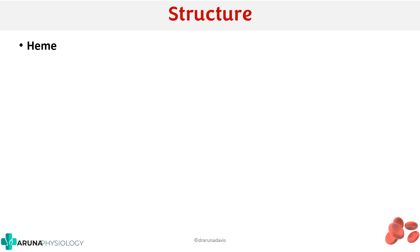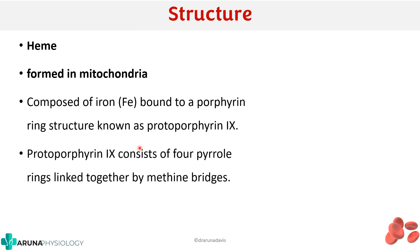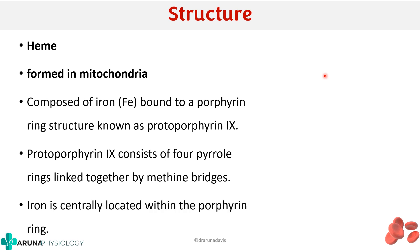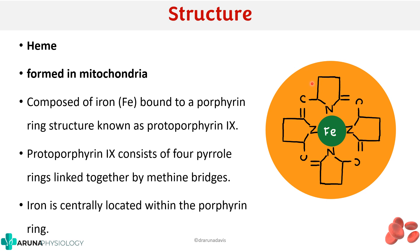Now we will see about the structure. Hemoglobin basically contains a heme part and a globin part. The heme part is formed inside the mitochondria and is composed of iron bound to a porphyrin ring structure known as protoporphyrin. Protoporphyrin 9 consists of 4 pyrrole rings linked together by methane bridges, with an iron at the center of this porphyrin ring. These 4 pyrrole rings form protoporphyrin 9, and protoporphyrin 9 along with iron forms the heme.